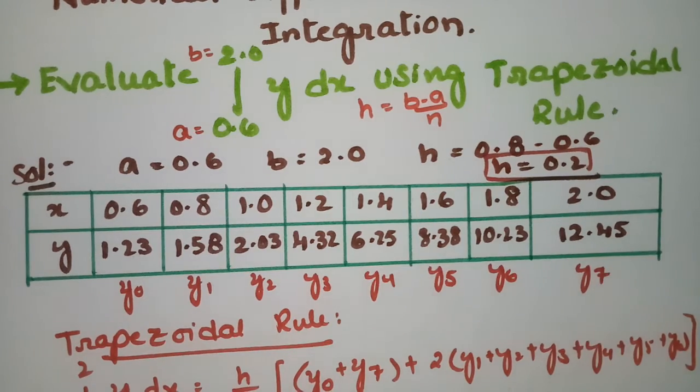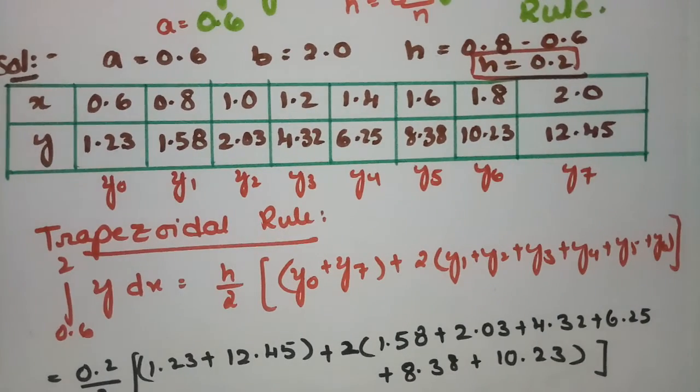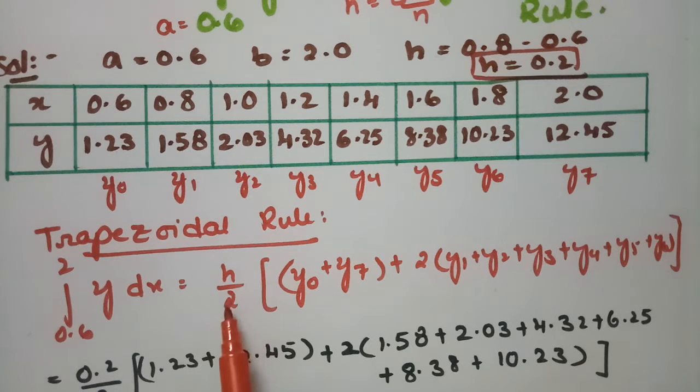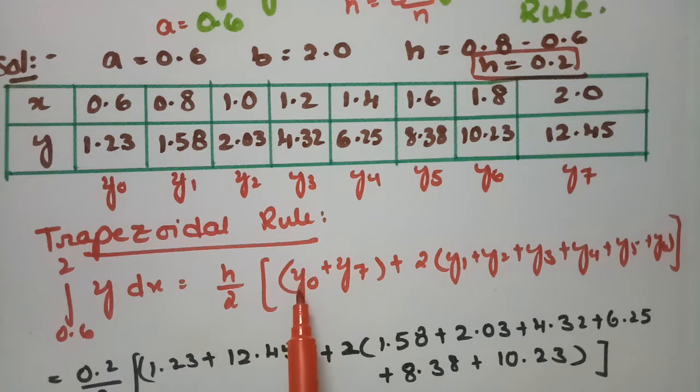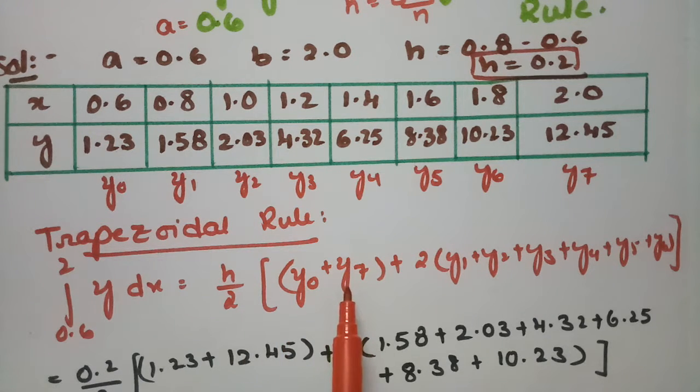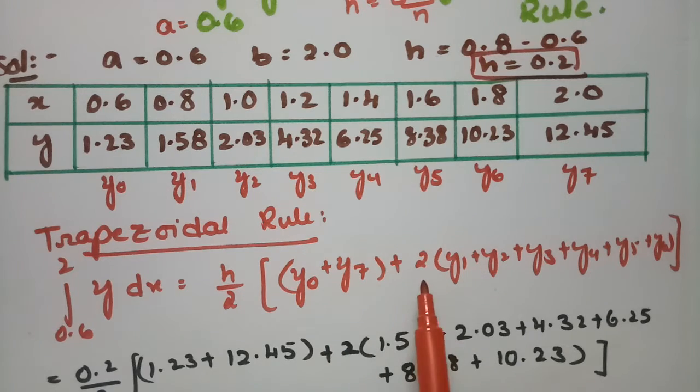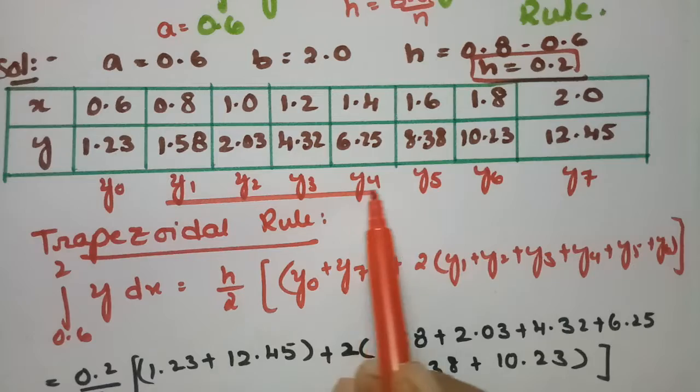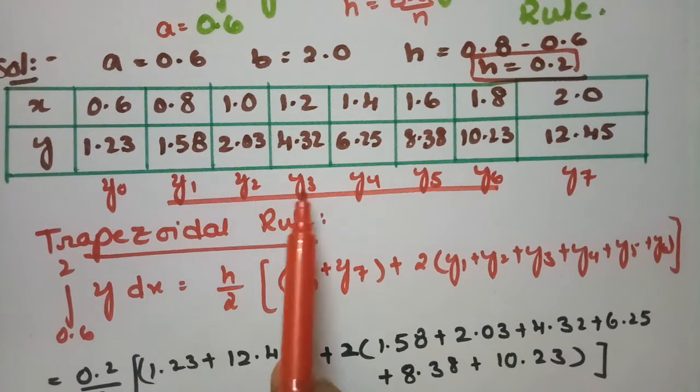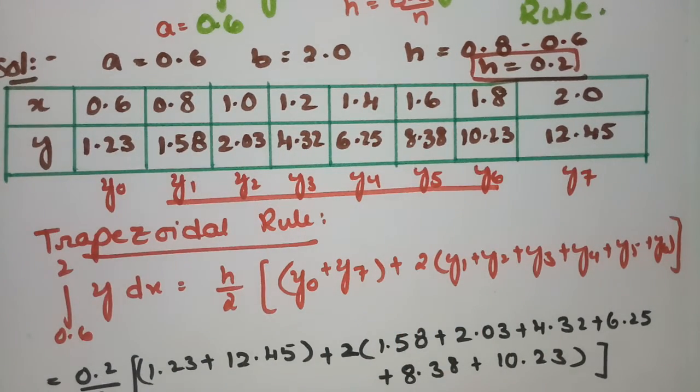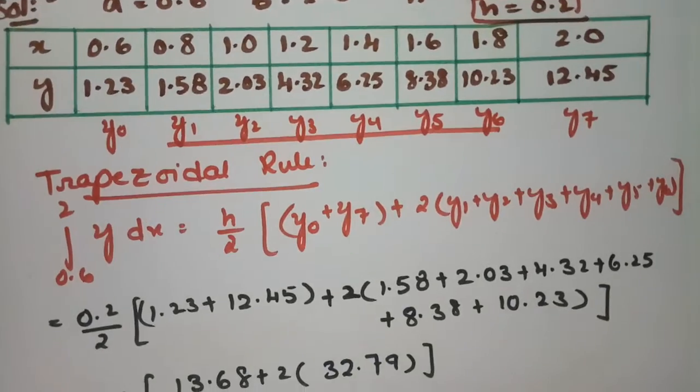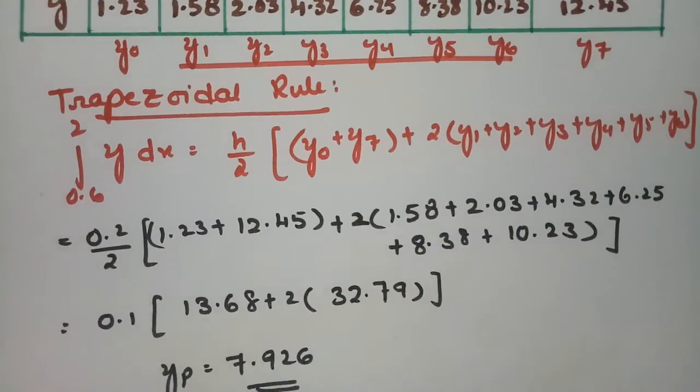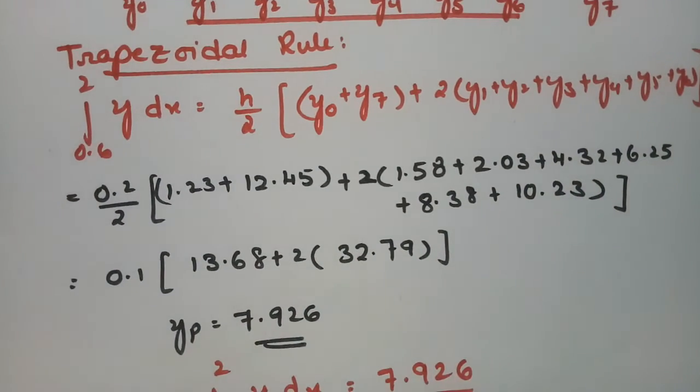According to the trapezoidal rule, it is h by 2 into the first ordinate plus the last ordinate plus two times the remaining ordinates. So we take first and last, then the rest: y1, y2, y3, y4, y5, y6. After substituting all values, we can easily calculate using a calculator.